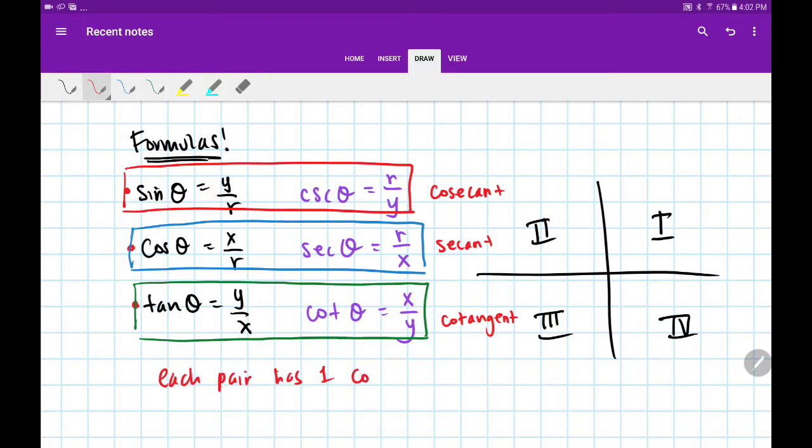What do I mean? This is sine—there's no co in front. So since sine doesn't have a co, it gets cosecant. Now there is one co in this pair.